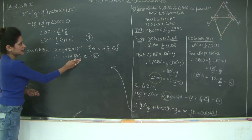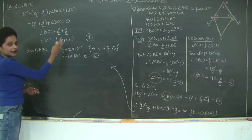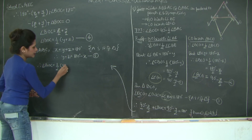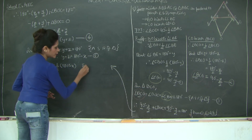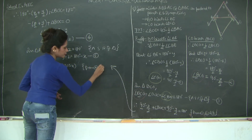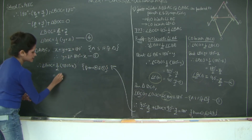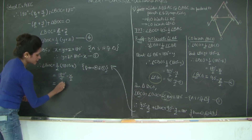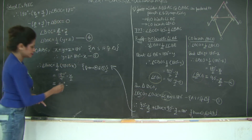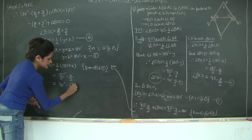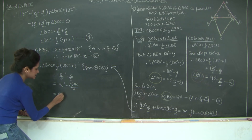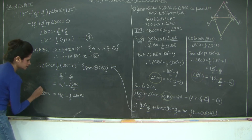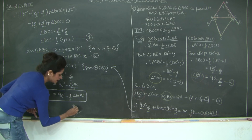Substituting equation 5 into equation 4: angle BOC = (1/2)(180 degrees − X) = 90 degrees − X/2. Since X is angle BAC, we get angle BOC = 90 degrees − (1/2) angle BAC. Hence proved.